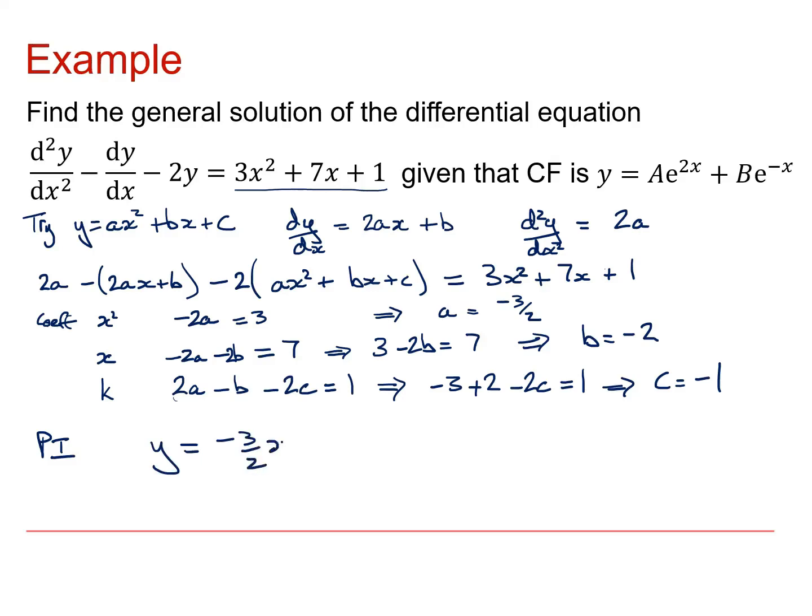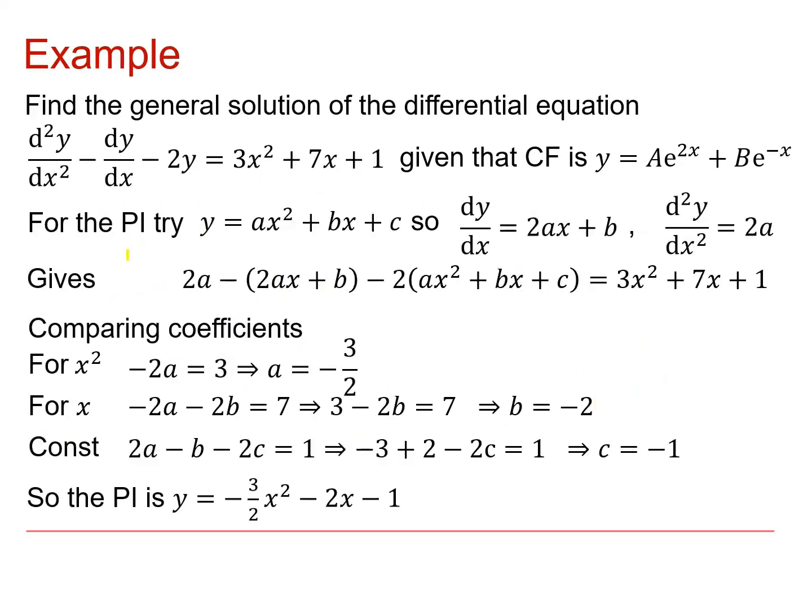Okay, there's that written up neatly for you. It's quite compact, so we'll take a bit of time taking this apart. There's the original question at the top. For the particular integral we tried something that is the same shape as this - I've got some x², some x's and a constant. Here is where I've differentiated those to give me 2ax plus b and 2a. Then substituting into the original differential equation I get this thing here. So here I go through comparing coefficients. From x² I get a value for a, from the x terms I deduce a value for b, and from the constant terms I deduce a value for c.